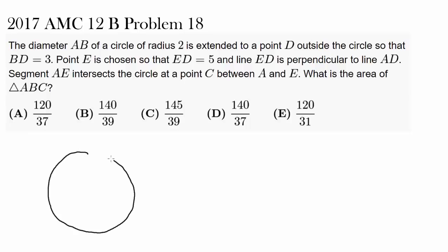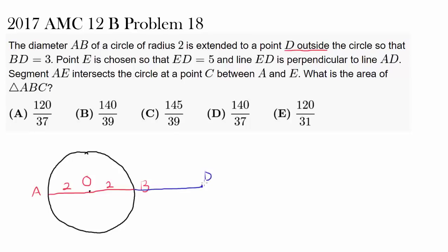Whenever you have a geometry problem, it's always advisable to make a drawing. We have a diameter AB, so let's draw it and label the center of the circle O. We know the radius is 2, so this distance is 2 and this distance is also 2. We're extending to point D outside such that BD equals 3, which is slightly further than OB. So this distance is 3.